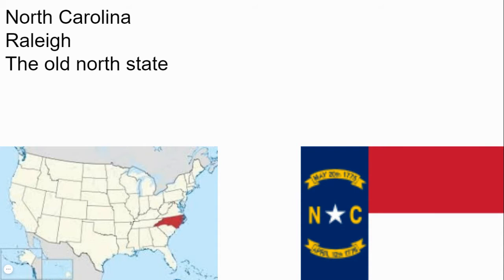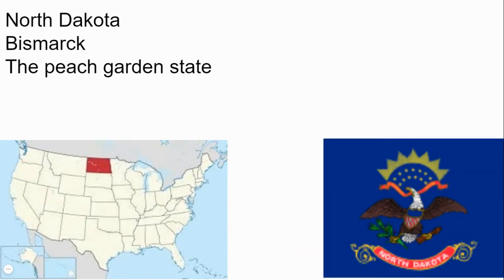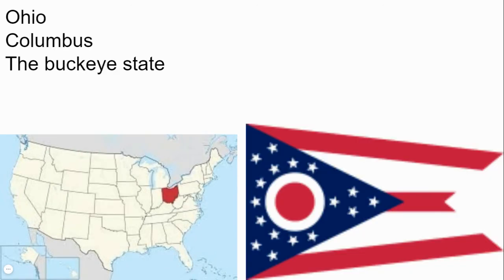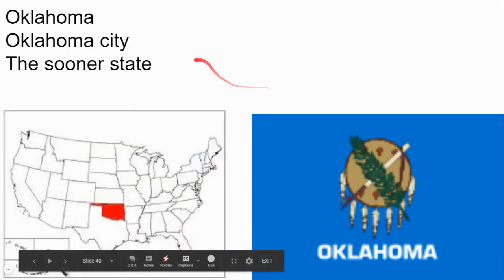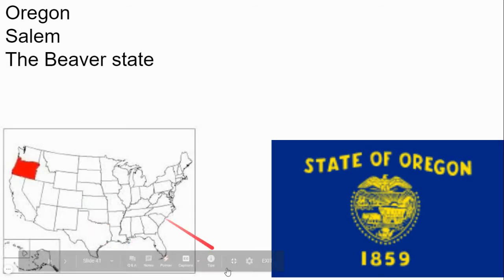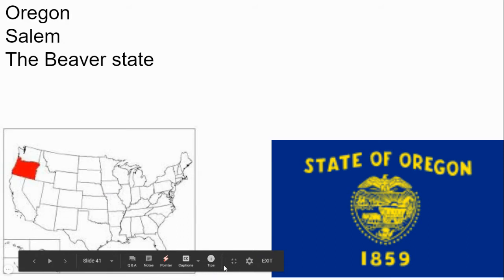This is North Carolina and Raleigh is the capital and the Old North State is its nickname. This state is North Dakota with Bismarck as its capital and the Peace Garden State as its nickname. The state is Ohio and the capital is Columbus and the Buckeye State. The state is Oklahoma and its capital is Oklahoma City and the Sooner State. This state is Oregon and its capital is Salem and the Beaver State is the nickname.